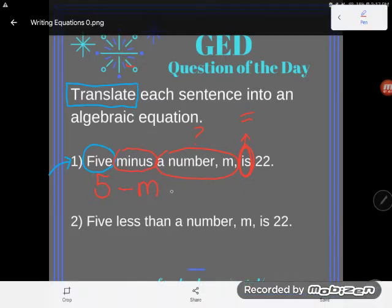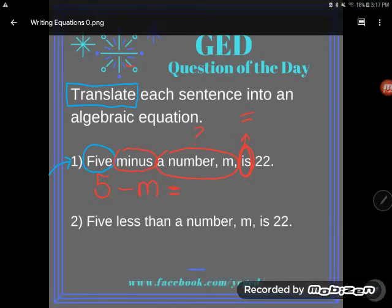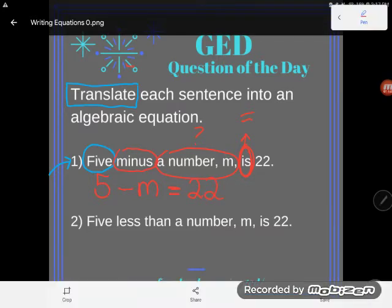So five minus a number M is, well it is what? Well it's 22. And there you go. I've translated this into an algebraic equation. And a lot of you guys are freaking out right now. I don't know how to solve this. All I asked you to do is do some translation. You're done. Job over. Thank you for obeying the directions. Now if I said translate and solve, that would be one thing. But all I said was just translate. So we're done there.